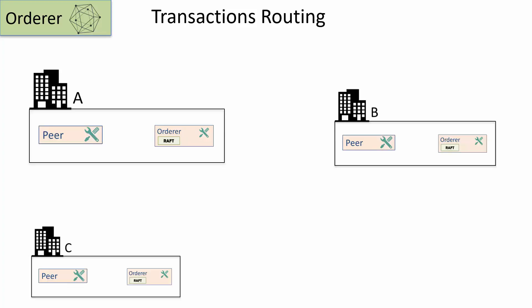Next, I'll walk you through how the transactions are routed in a raft-based network. This is a logical representation. The underlying implementation is much more complex. Let's say there are three organizations, organization A, B, and C. Each of these organizations are hosting an instance of an orderer which is part of a raft network.